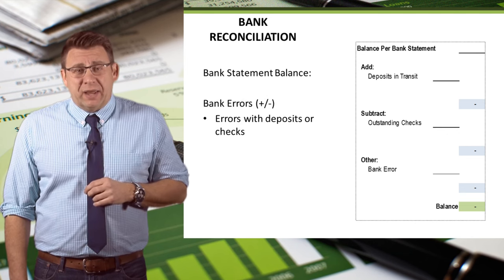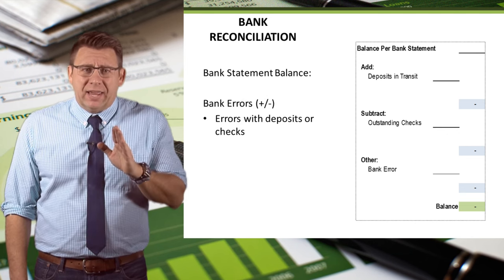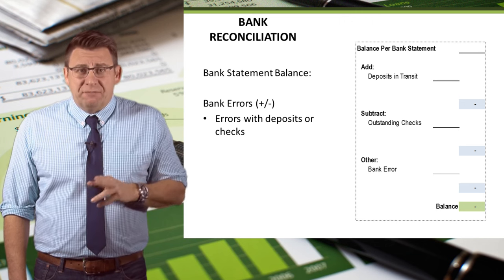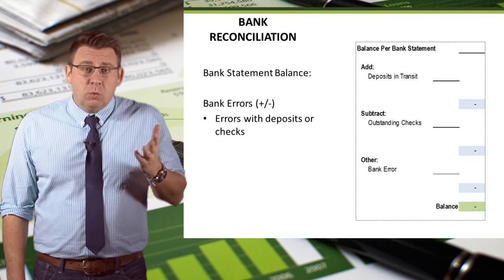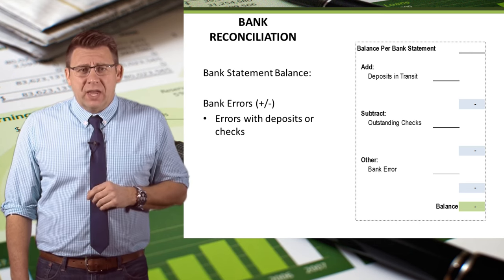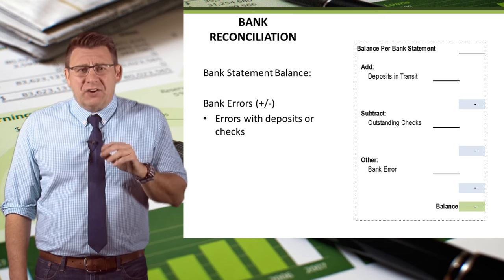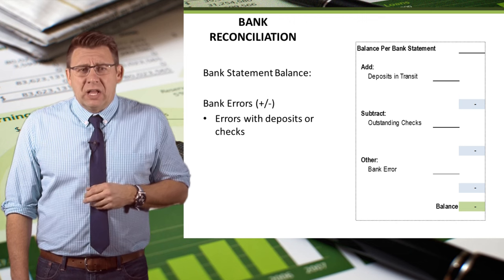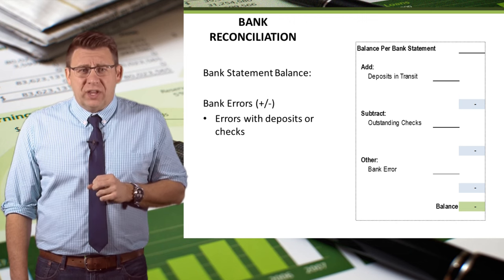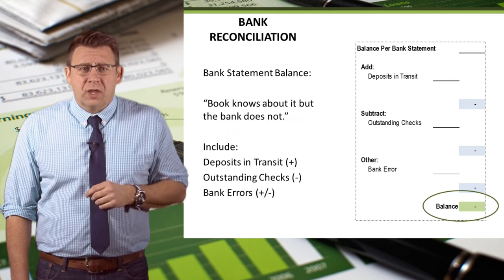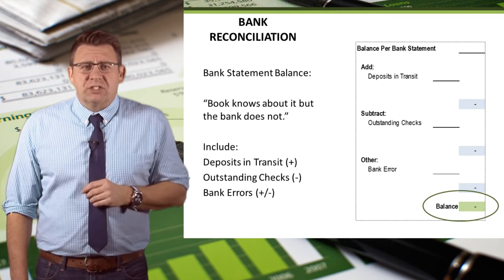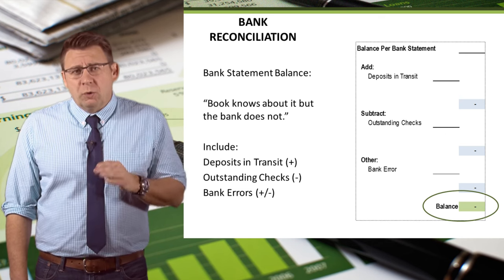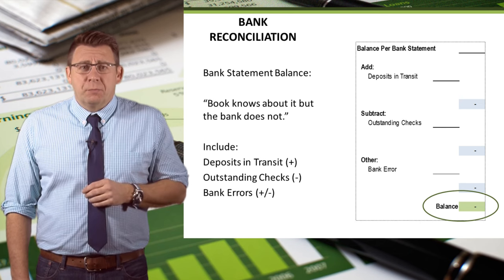The final item that reconciles the bank statement balance are bank errors. The book knows about a bank error and the bank does not — if the bank knew about the error, it would have fixed it and the error wouldn't exist. Bank errors can either add or subtract from the bank statement balance depending on the nature of the error, which might require some critical thinking. The result of these additions and deductions from the bank statement balance is an adjusted cash balance, which will be compared to the results from reconciling the book side.